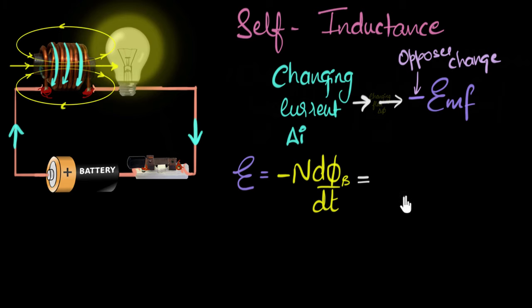So we can write this to be equal to negative dI/dt. We're basically saying the flux is changing because the current is changing, and it's proportional, so there should be some proportionality constant, and that constant we often like to call L. And that L represents the self-inductance.